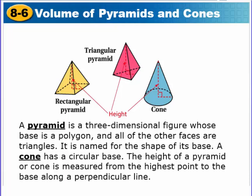So what we need to know — it says down here at the bottom — a pyramid is a three-dimensional figure whose base is a polygon. In this particular one we have a square pyramid, basically. We call it a rectangular pyramid, or another name is a square pyramid. These are like the pyramids in Egypt. Then you also have a triangular pyramid, so this base is a triangle. And then you have a cone, which has a circle base. And all the other faces are triangles.